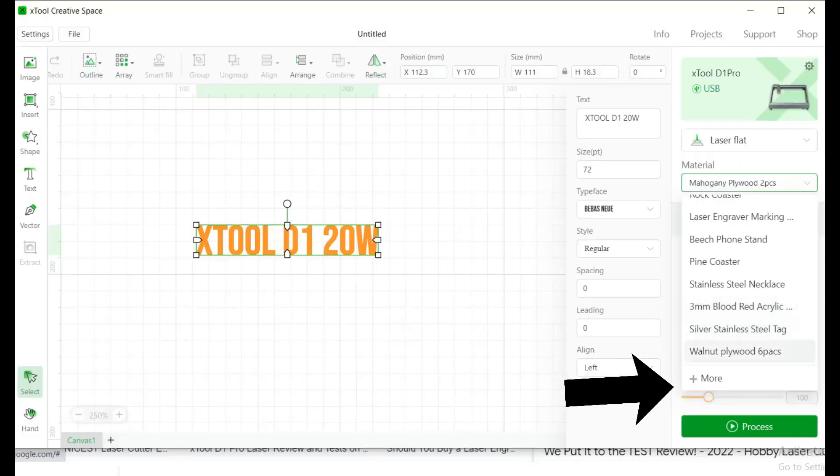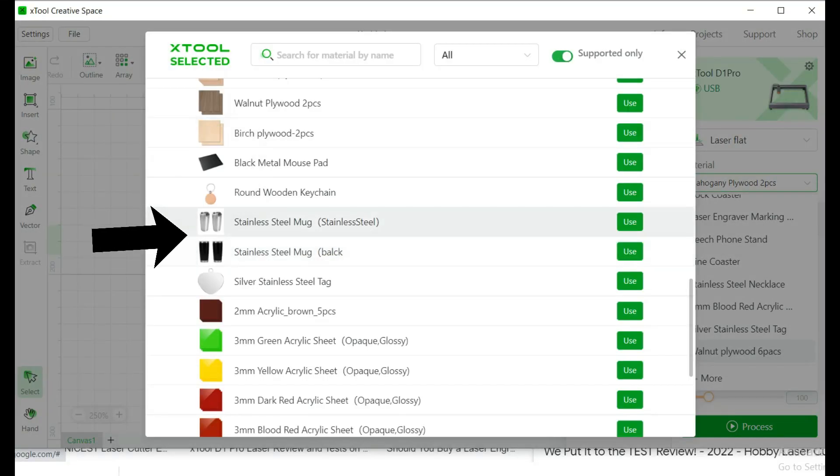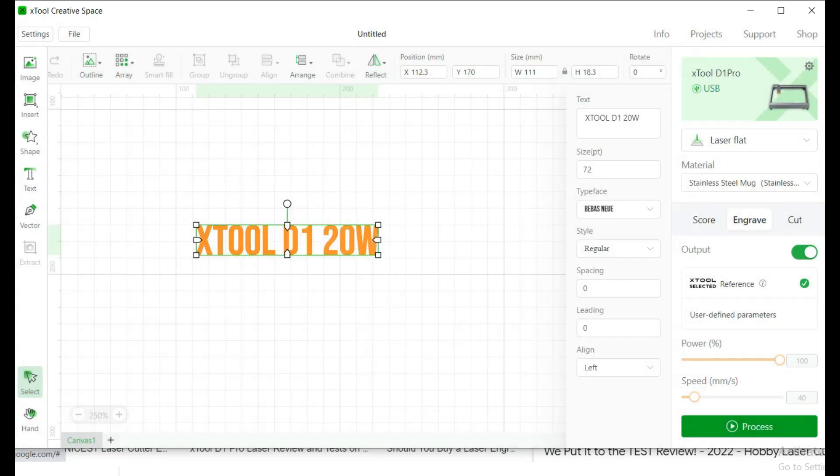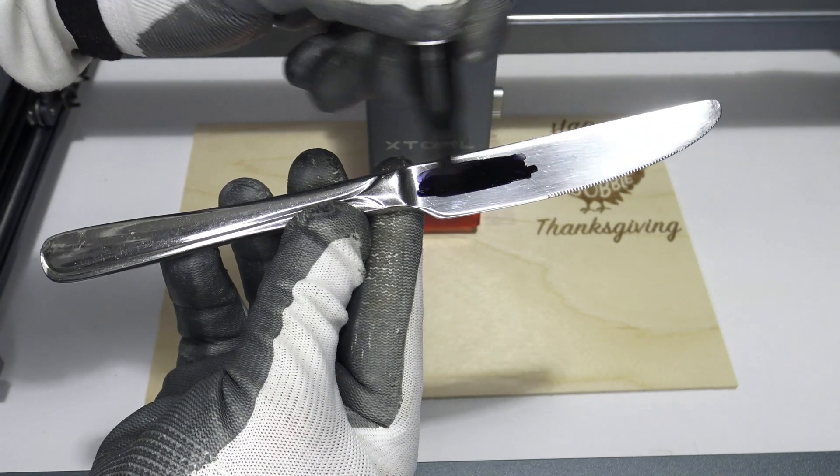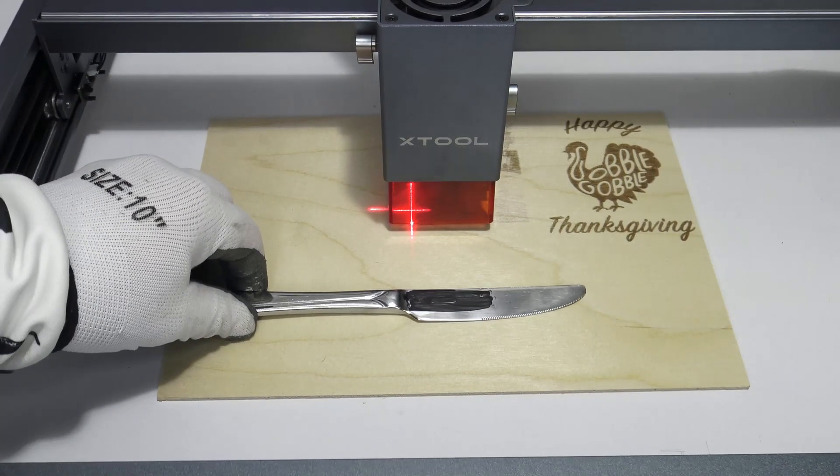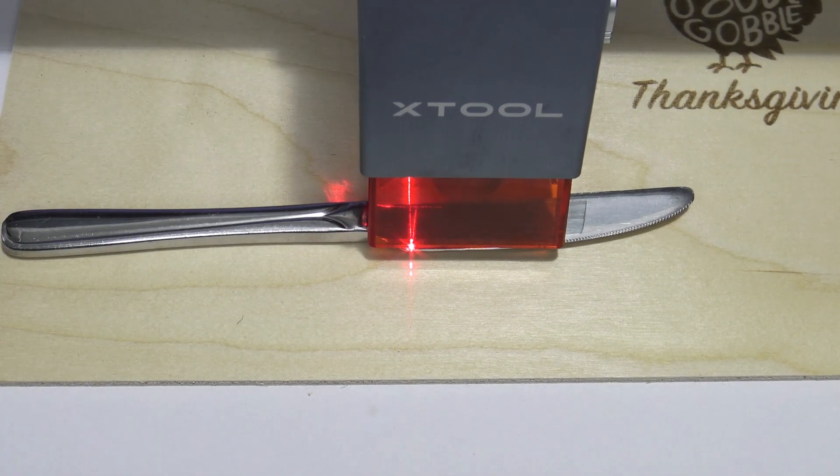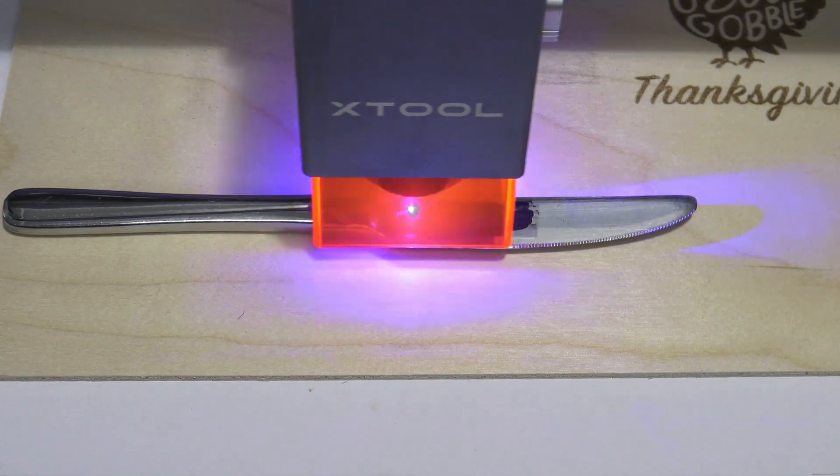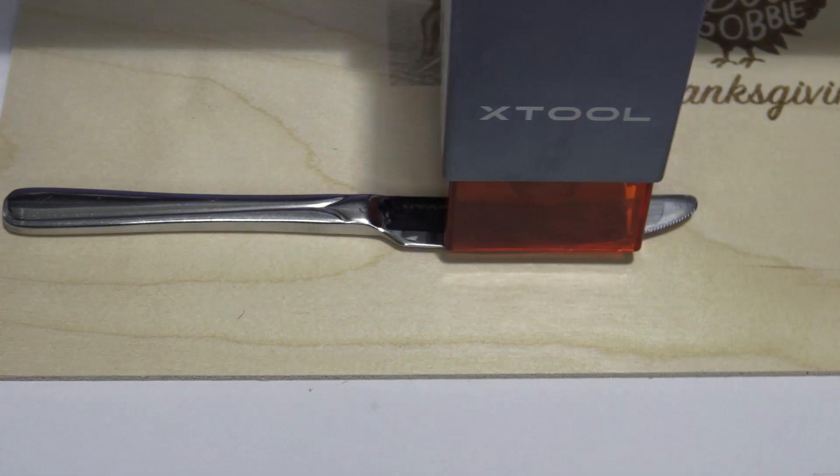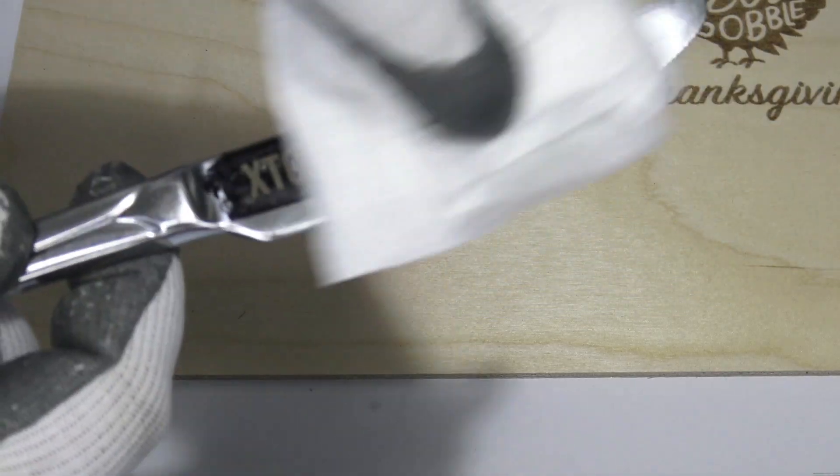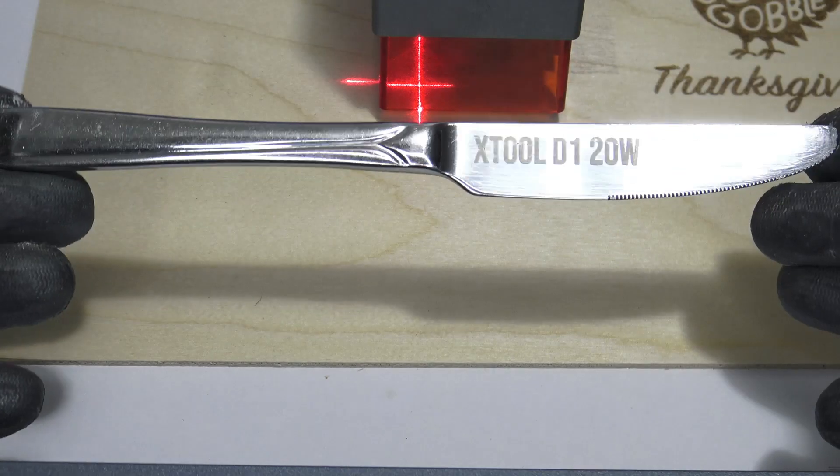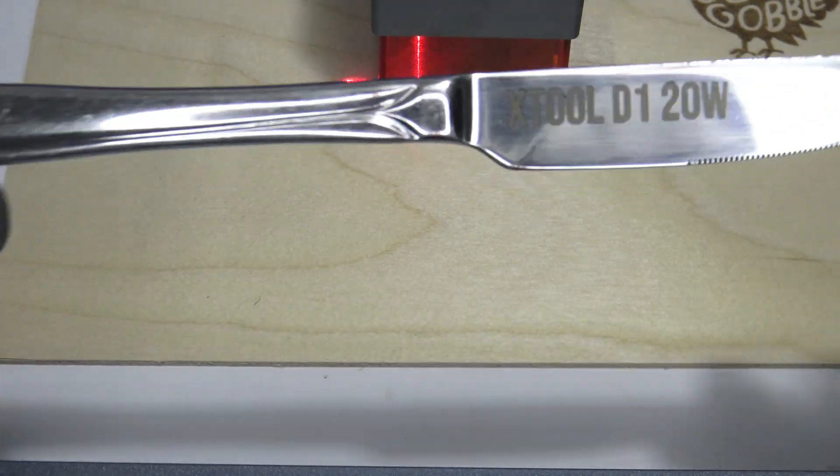Now I'm going to engrave the kitchen knife. All you have to do is select the material metal and the program will determine the parameters by itself. Trace the surface you want to engrave with the marker. This is great, I think I'm going to start engraving everything at home.